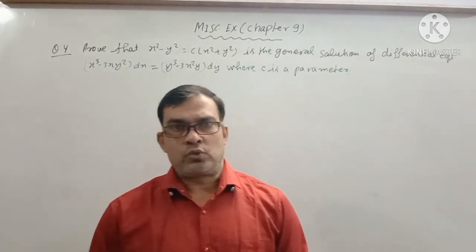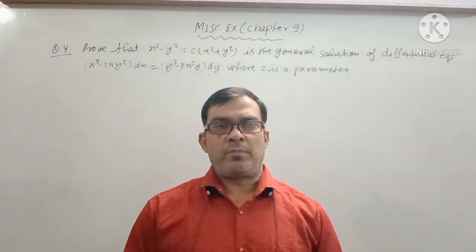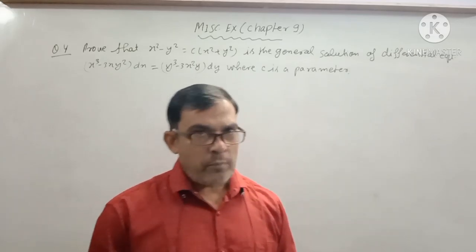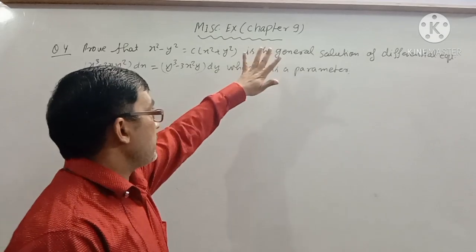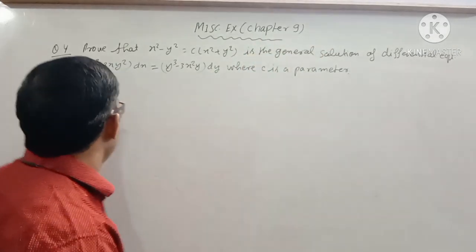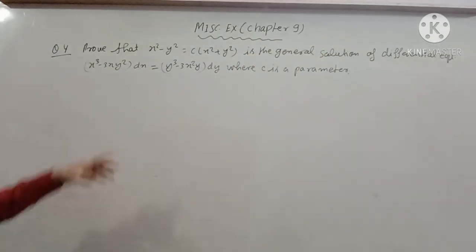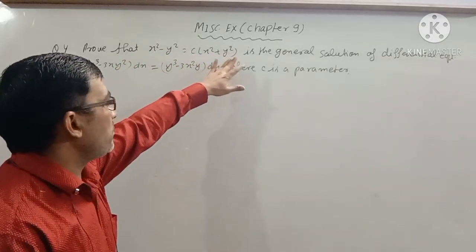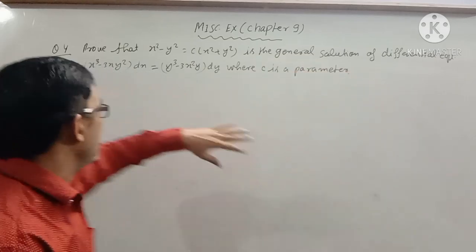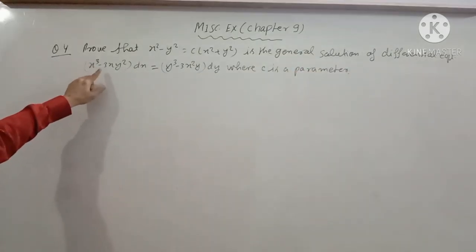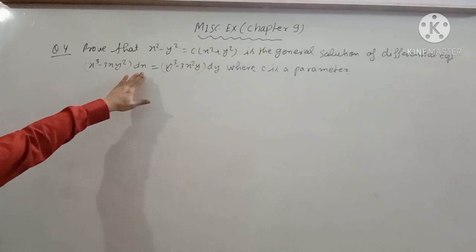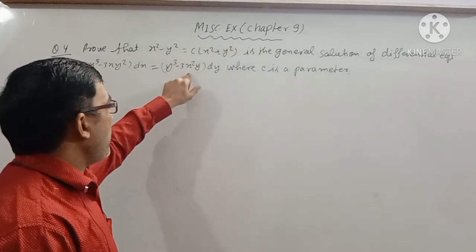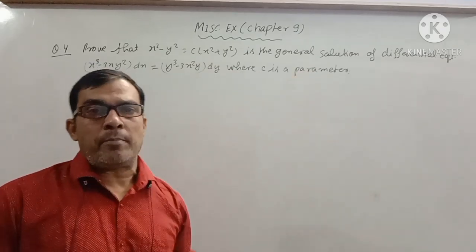Hello everyone, you are watching your YouTube channel Gil Mathematics Academy. Today's topic is Miscellaneous Exercise Chapter No. 9, Question No. 4. Prove that x² - y² = c(x² + y²) is the general solution of the differential equation x(x³ - 3xy²)dx = y(y³ - 3x²y)dy, where c is a parameter.